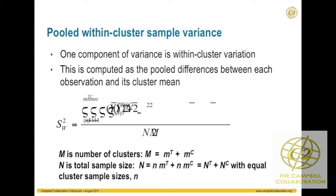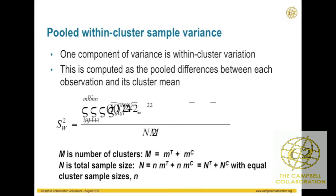Just to remember the notation: we use capital M to indicate the total number of clusters — the total number of schools or clinics. MT and MC are the individual numbers of clusters within the treatment and control group. Our total sample size is capital N, and we assume equal sample sizes within each cluster of lowercase n. We get our total sample size by taking n times MT plus n times MC.